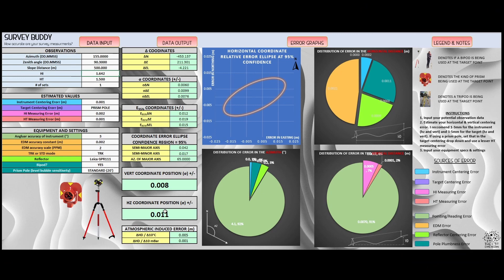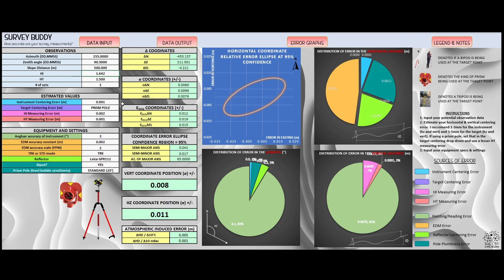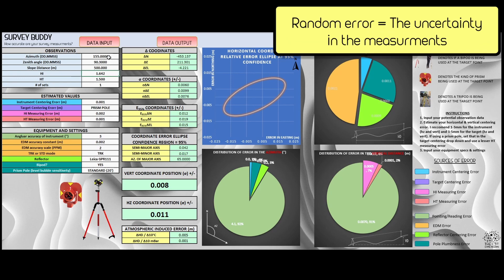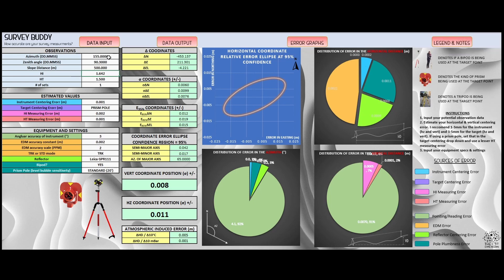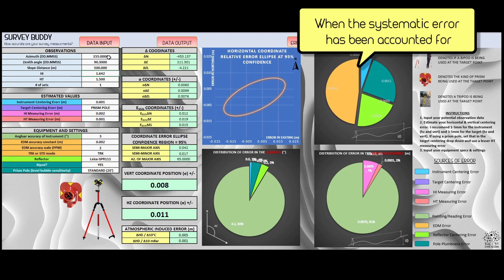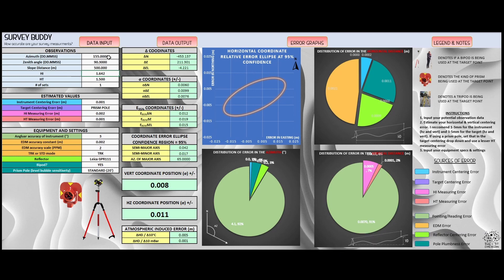So what is it? SurveyBuddy is an error propagation program that uses error propagation equations in the background to determine statistically the random error of our survey measurements. The output it gives us is how accurate, relatively speaking, is the coordinate that we're measuring to.